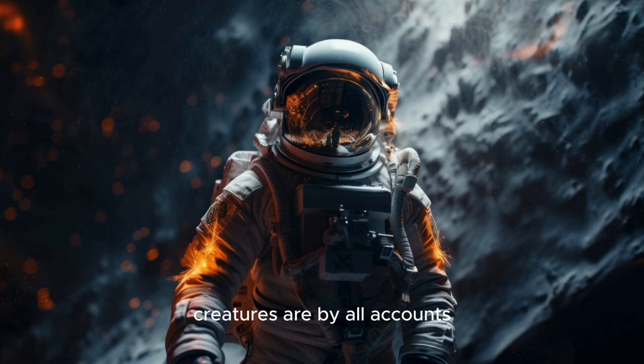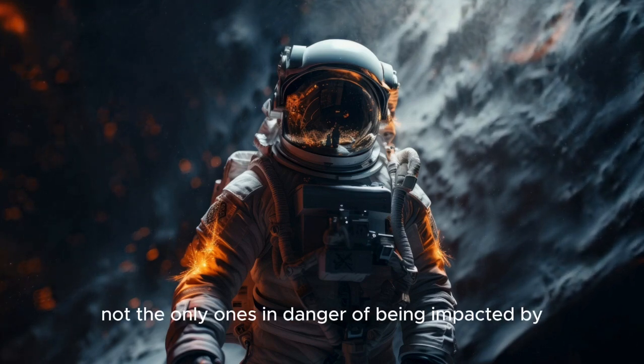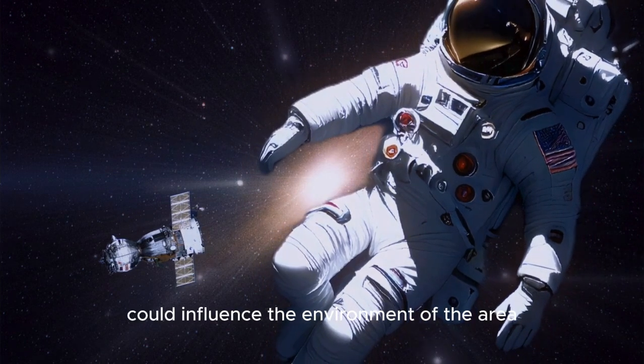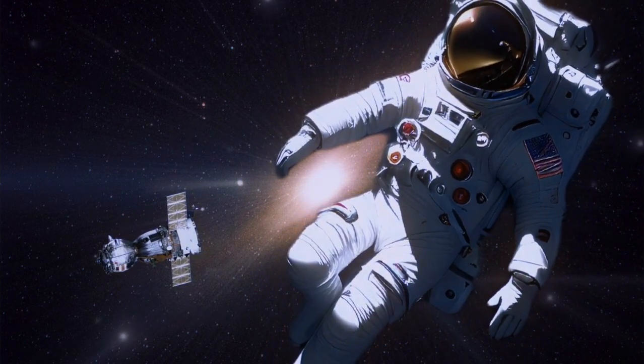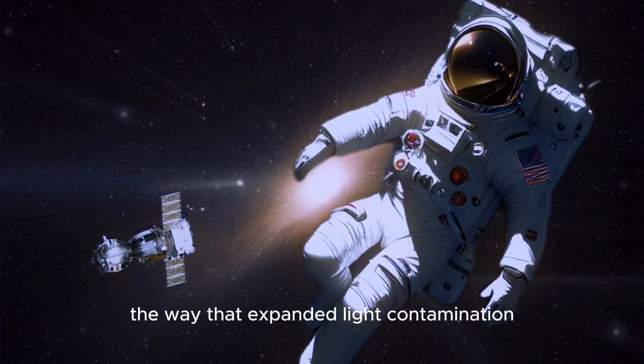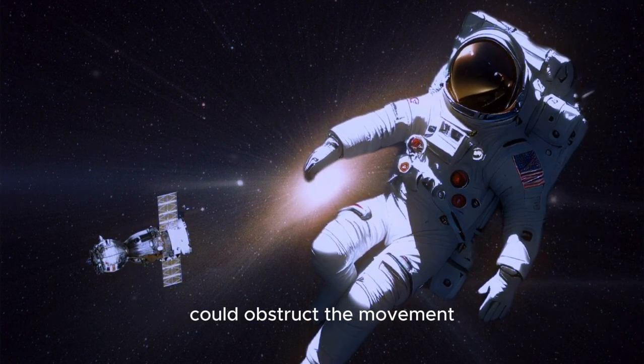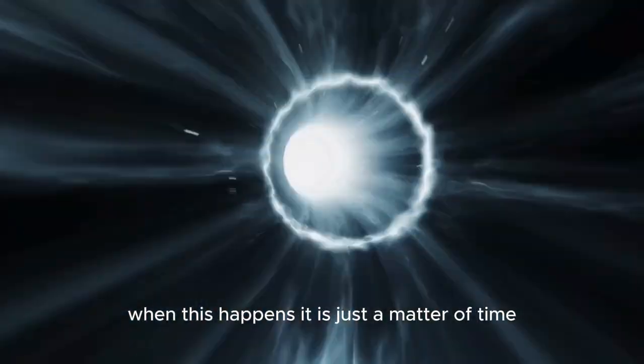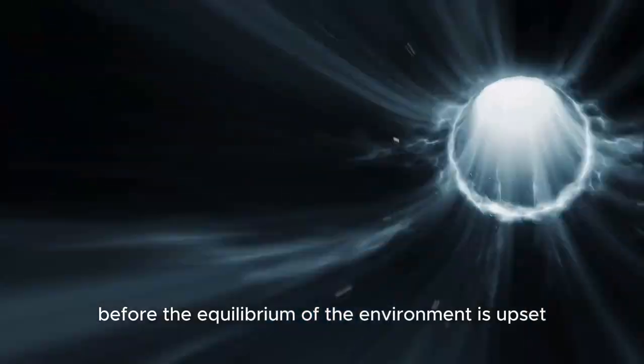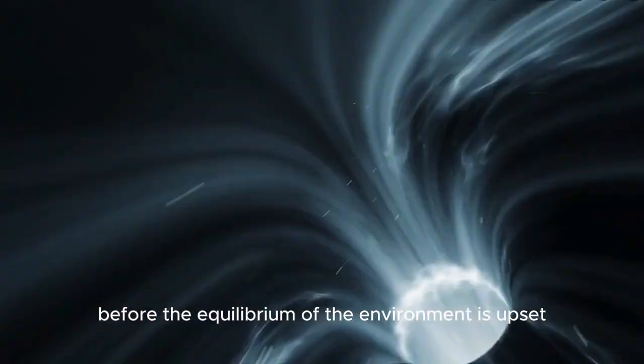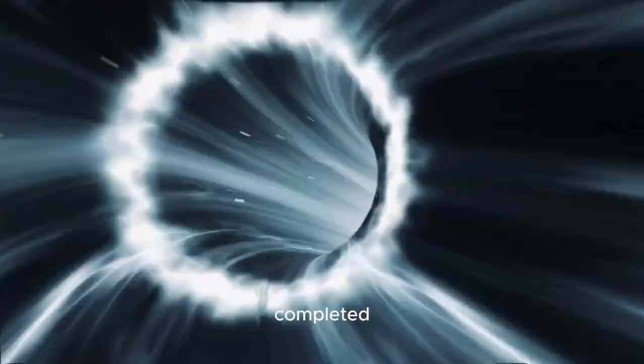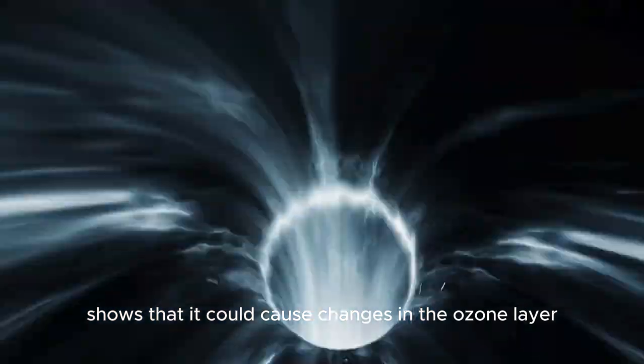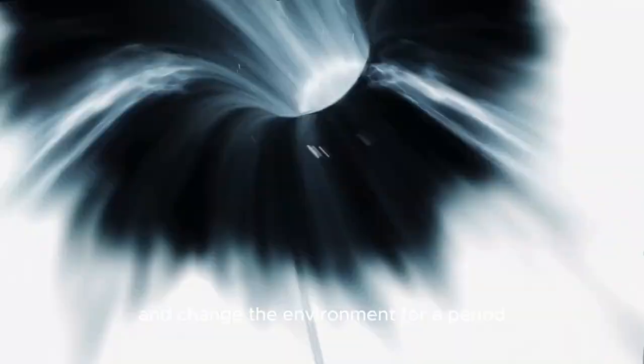Creatures are by all accounts not the only ones in danger of being impacted by the cosmic explosion. The expanded splendor could influence the environment of the area. We should take, for example, the way that expanded light contamination could obstruct the movement examples of birds and can affect the conduct of bugs. When this happens, it is just a matter of time before the equilibrium of the environment is upset. A glance at some of the models completed to assess the degree of the cosmic explosion's effect shows that it could cause changes in the ozone layer and change the environment for a period.